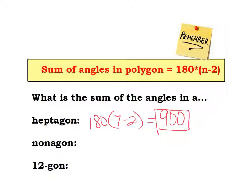What that means is, if you took a 7-sided figure and added this angle, to this angle, to this angle, and all the interior angles, they're going to add up to 900. No matter what the shape, as long as it has 7 sides, those angles add up to 900.